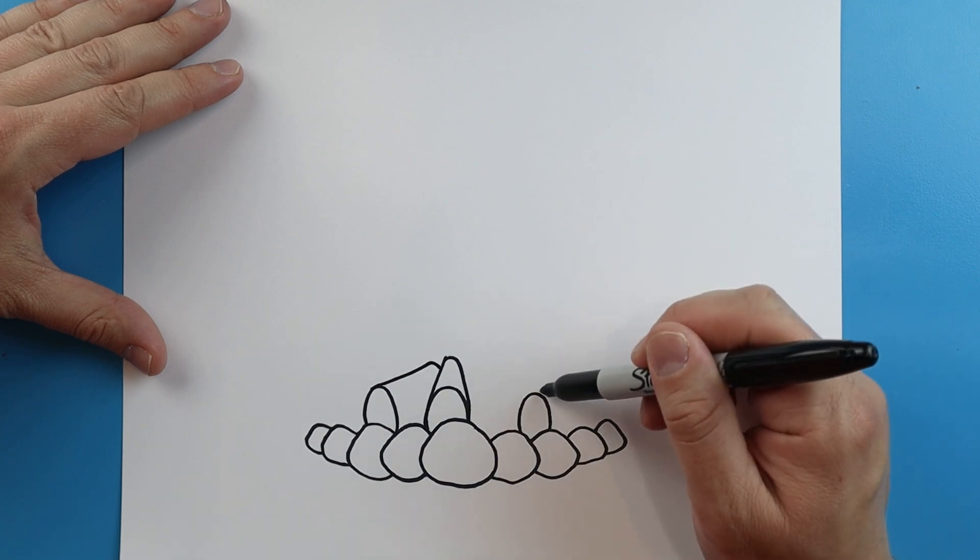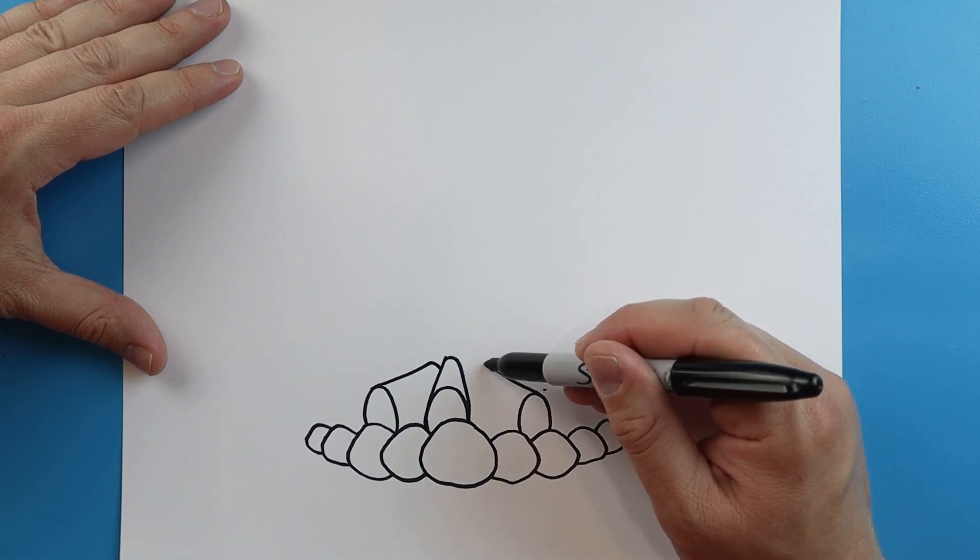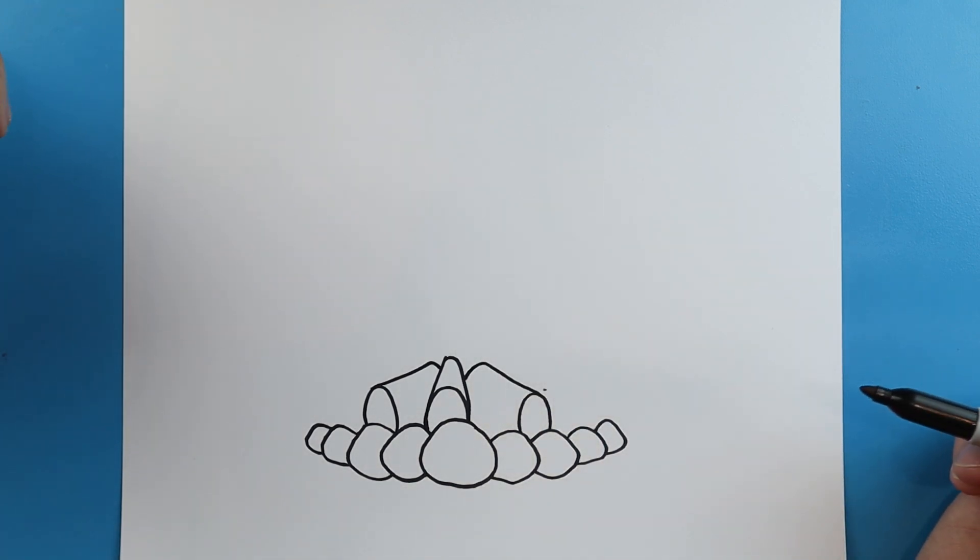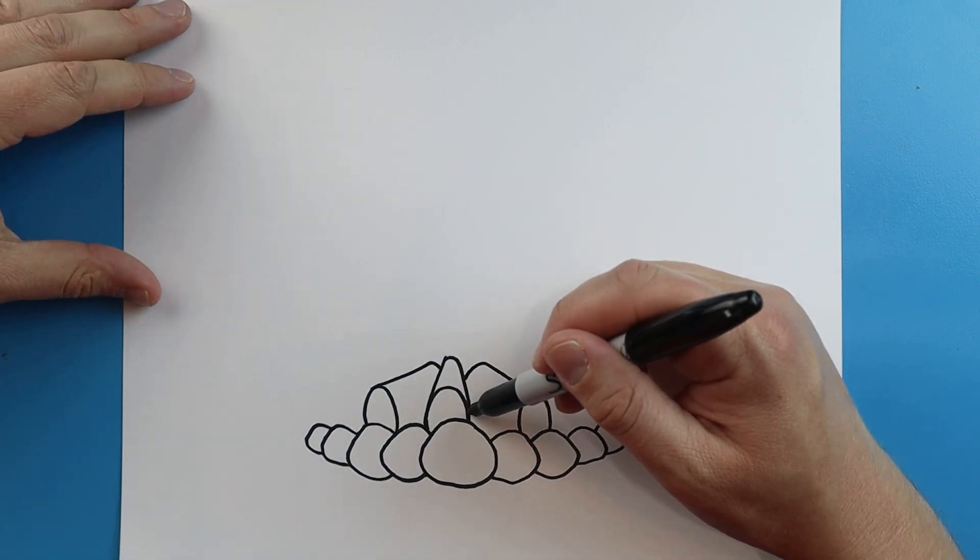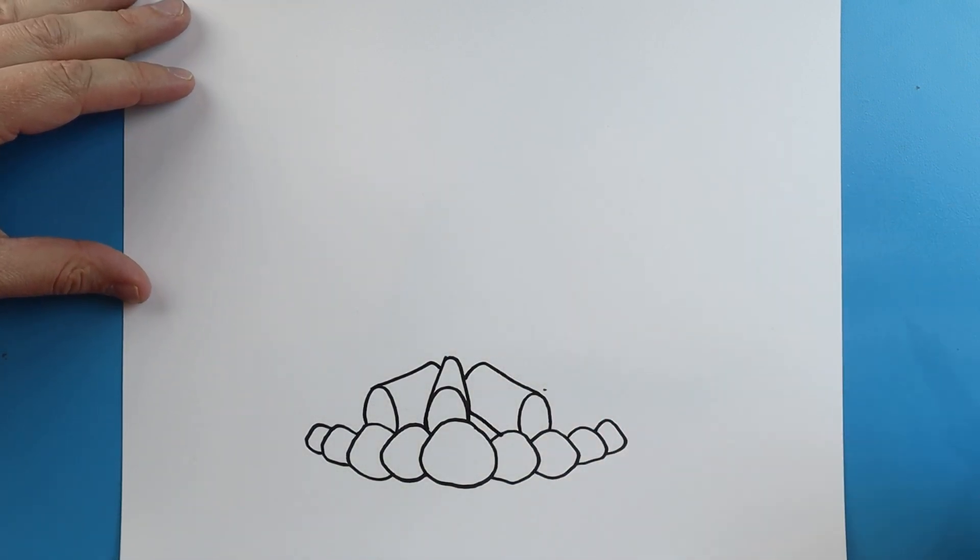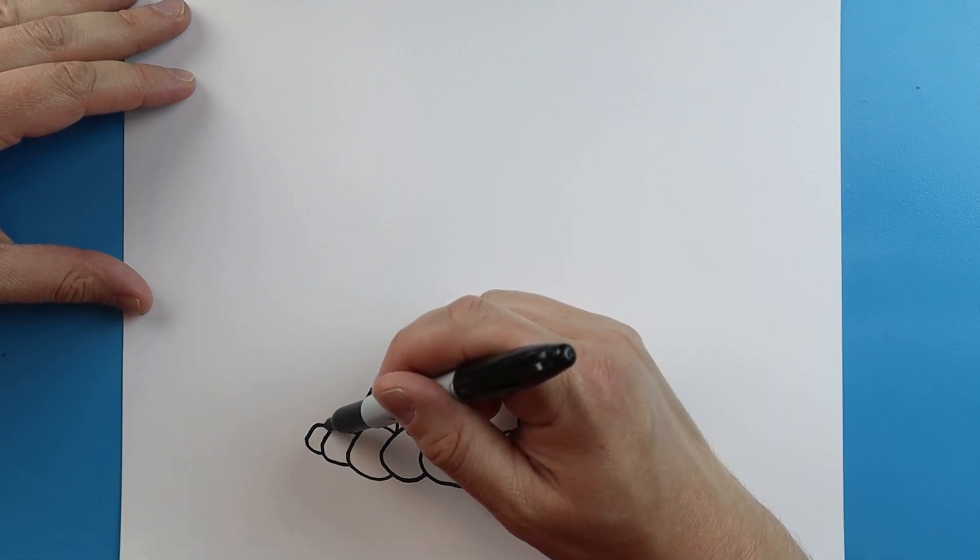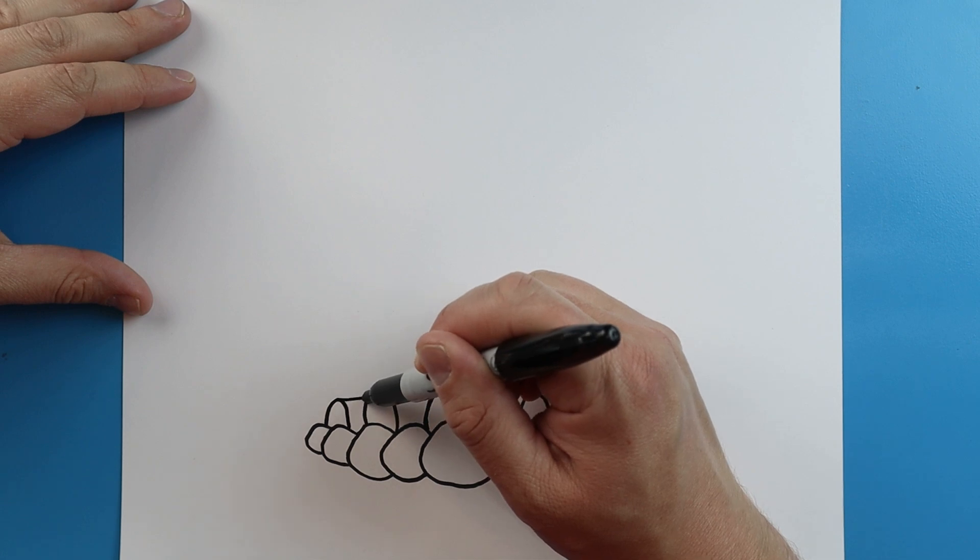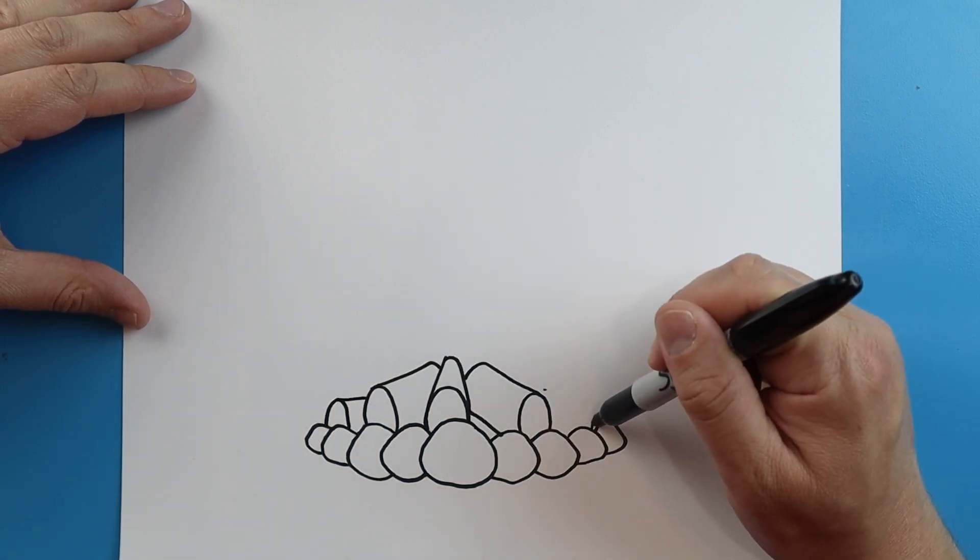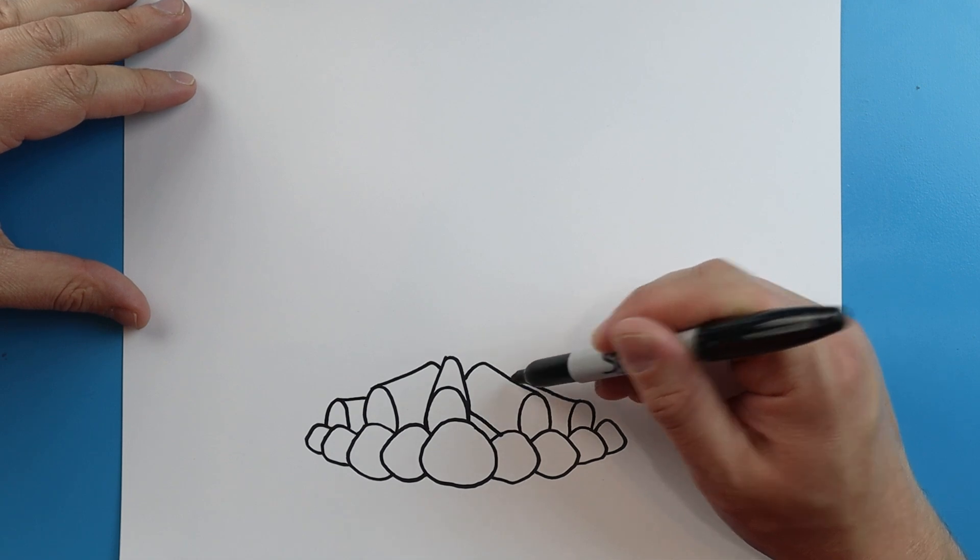And then I'll make this one come up and then down. I'll draw a little line down here. I'll put another half oval here with a line that connects, and one more here with a line that's just going to come up and down.